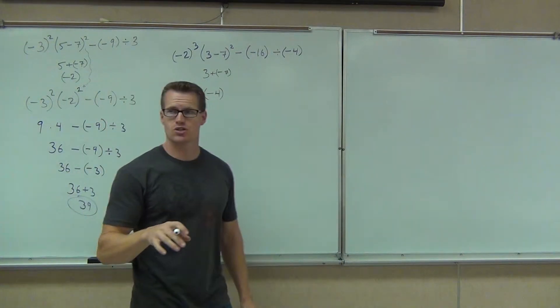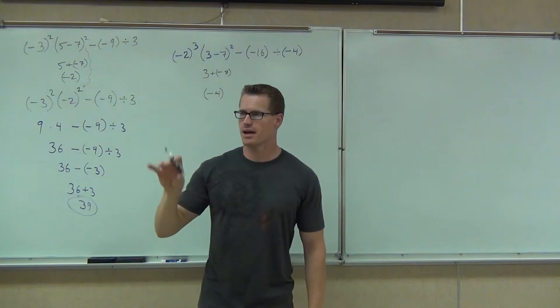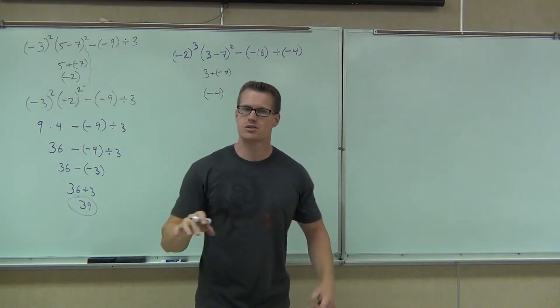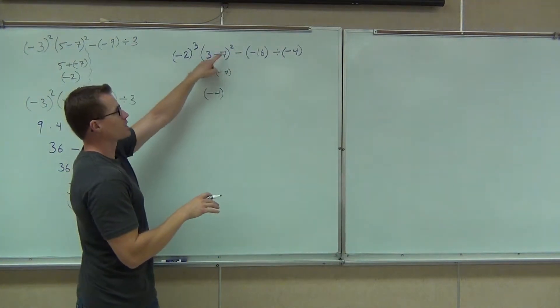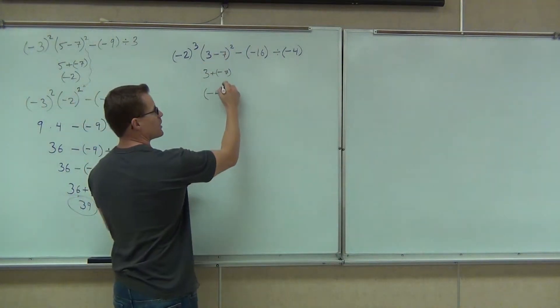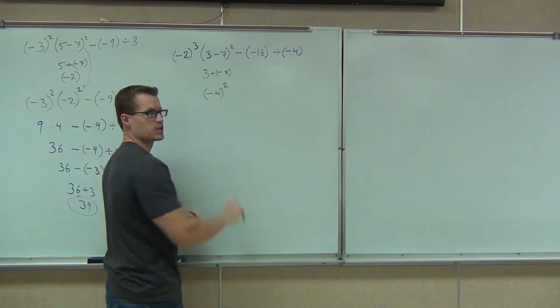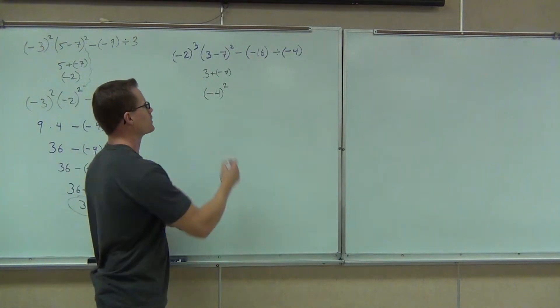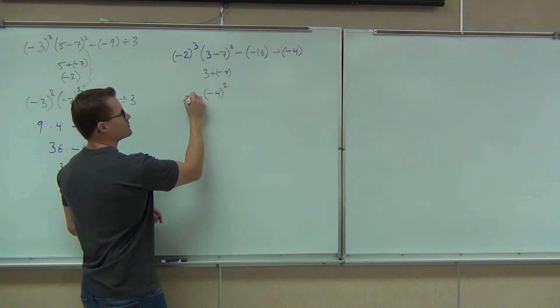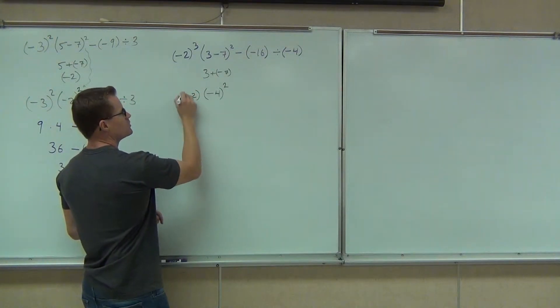You really want to make sure that you carry down the exponent. So since we had negative 4 here, that was raised to the power of 2 — you have to have that. You can't forget about that. We also have negative 2 cubed.